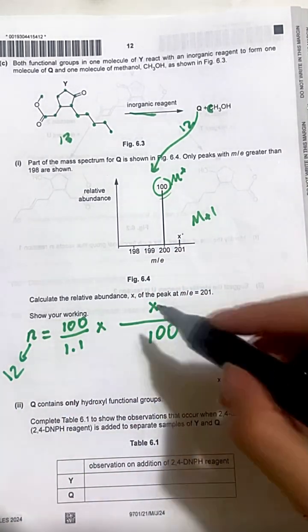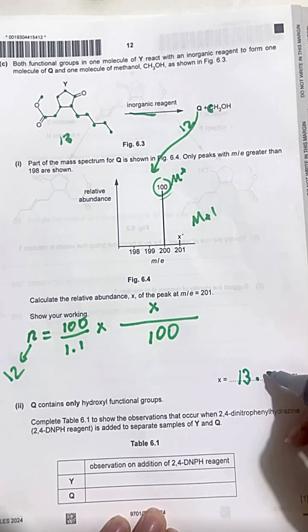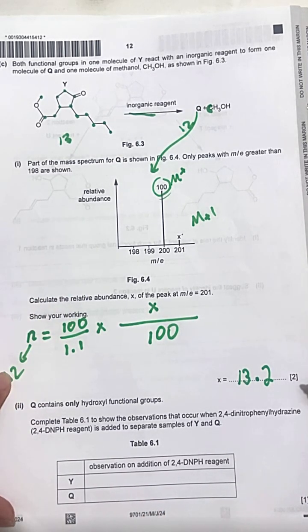Now, everything is solved. X on calculator will be 13.2. One mark is going for counting that there is 12 carbons in it and one mark for the answer.